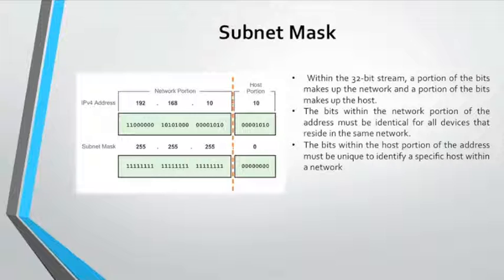Understanding binary notation is important when determining if two hosts are in the same network. An IP address is made up of two parts: a network portion and a host portion. When determining the network portion versus the host portion, it is necessary to look not at the decimal value but at the 32-bit stream. Within the 32-bit stream, a portion of the bits make up the network and a portion make up the host. The bits within the network portion must be identical for all devices that reside in the same network.